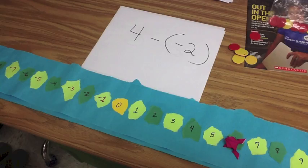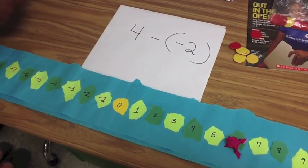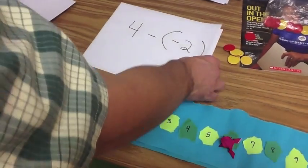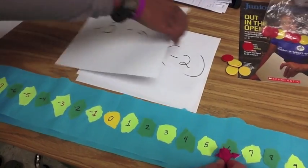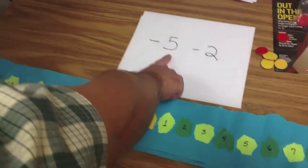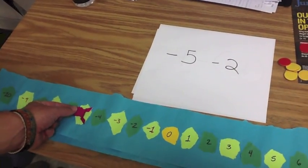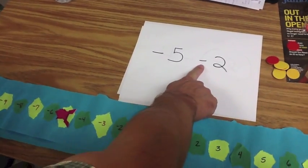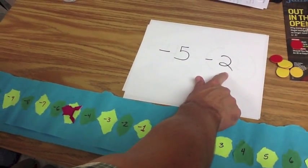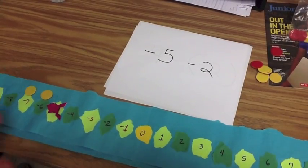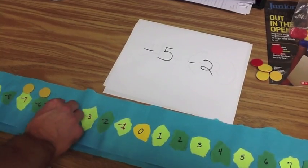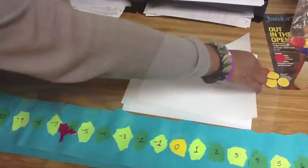So let's go ahead and do a negative minus a positive. So the first number, negative five, is telling us where our frog is. It's a sad frog, but it's jumping two. So it's going to jump this way to negative seven.